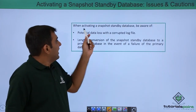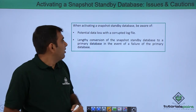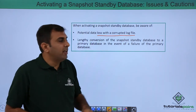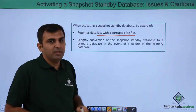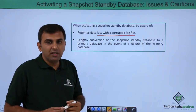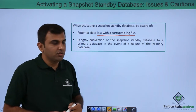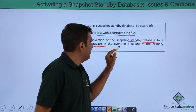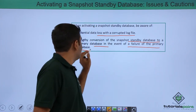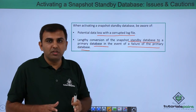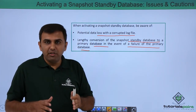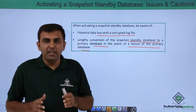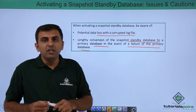When using the Snapshot Standby Database, you need to be aware of potential data loss if redo log files become corrupted. Also, a lengthy conversion of the Snapshot Standby Database back to the primary — in the event of primary failure — can also result in data loss if a long process is running on the snapshot when the primary fails.